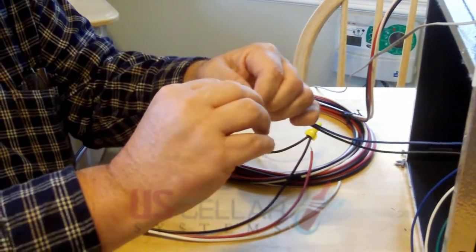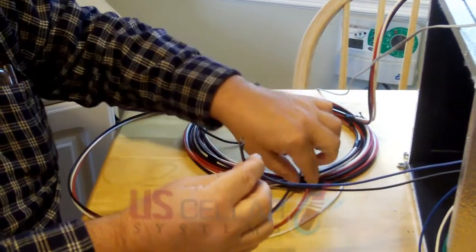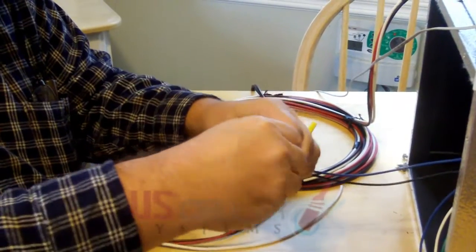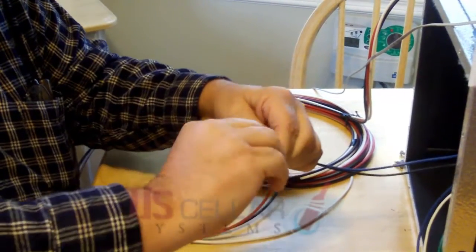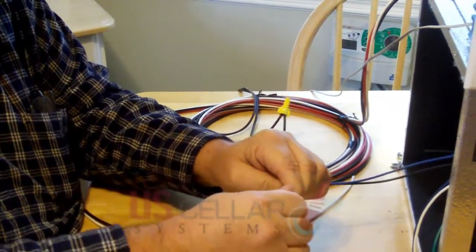of the black wires, connect those together, and then connect that to the red wire on your wiring harness. Twist those together and put a wire nut on it.